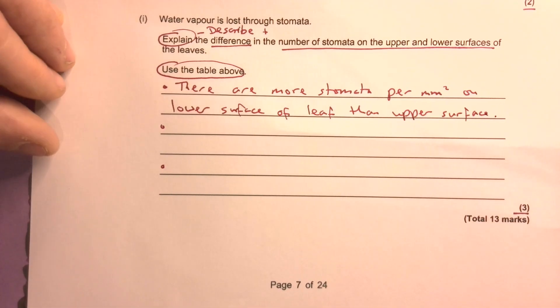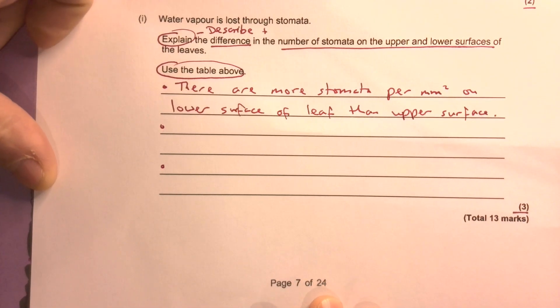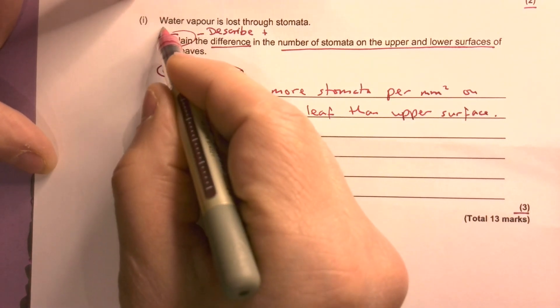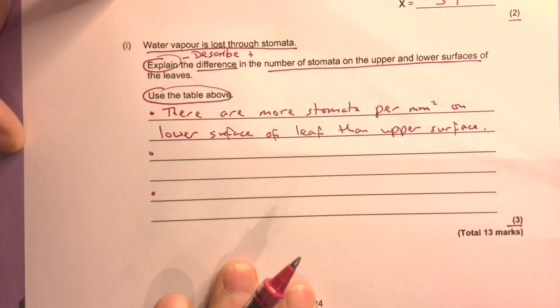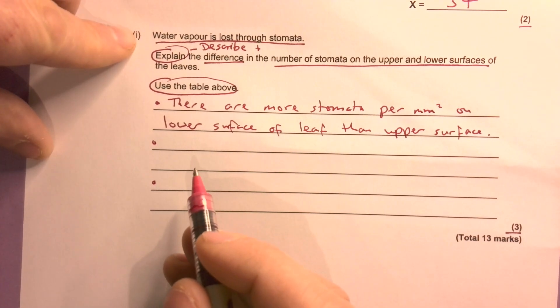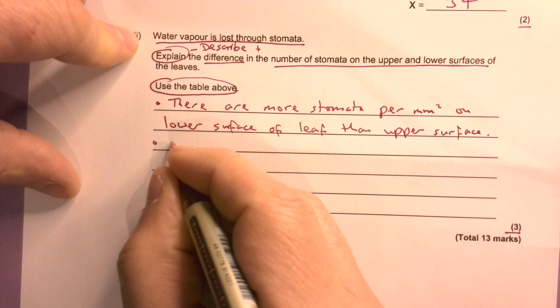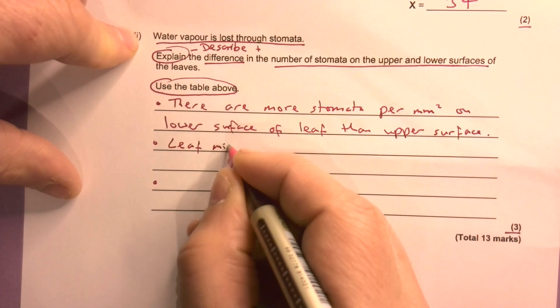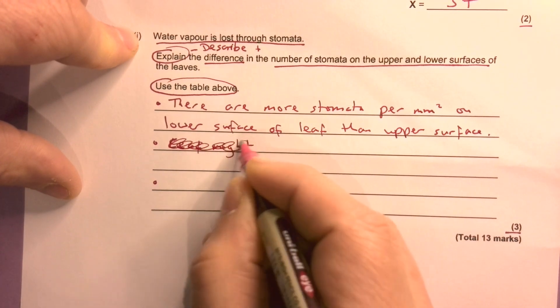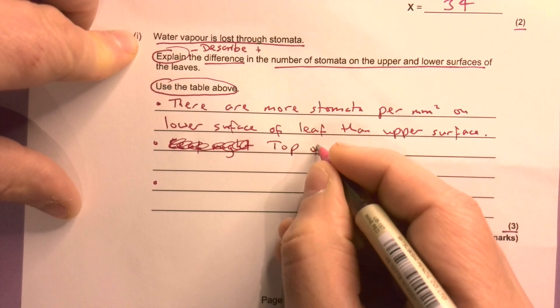Okay, now I need to say why that is. What do I know? I know that water vapour is lost through the stomata. The fact it told me that suggests that's important. So it could be that plants don't want to lose water. Let's think about that. On the top of the leaf it's going to be hotter, won't it?